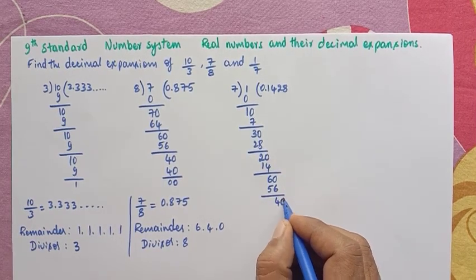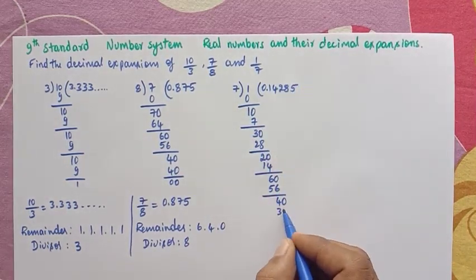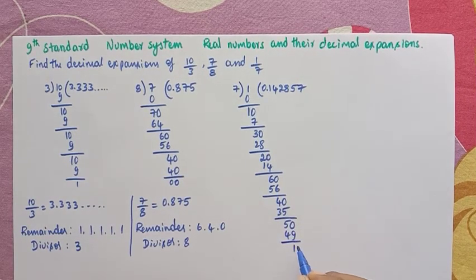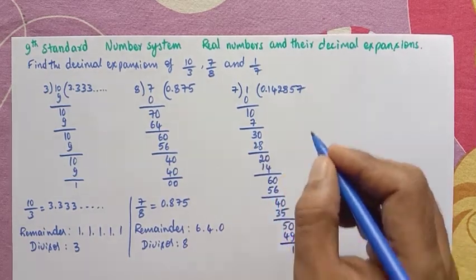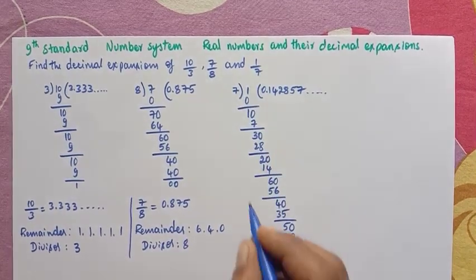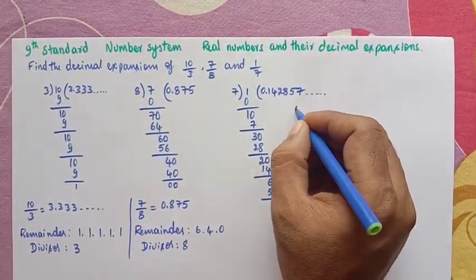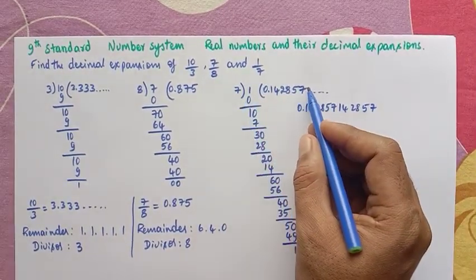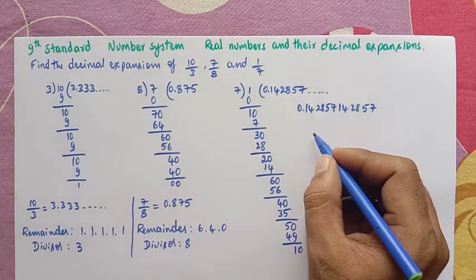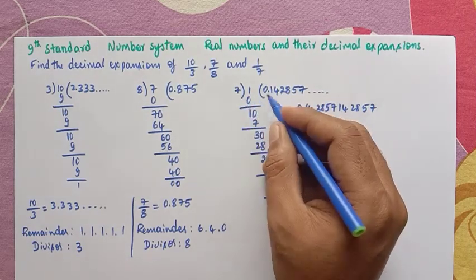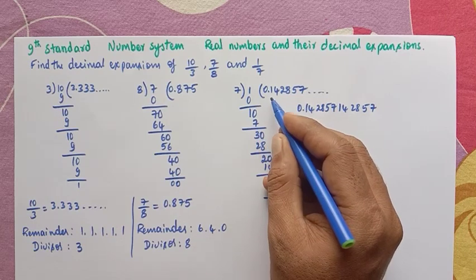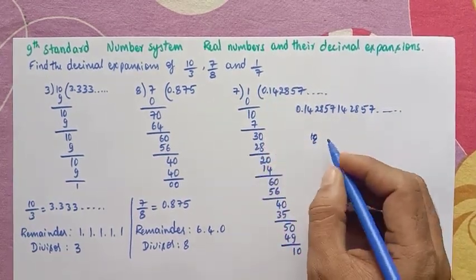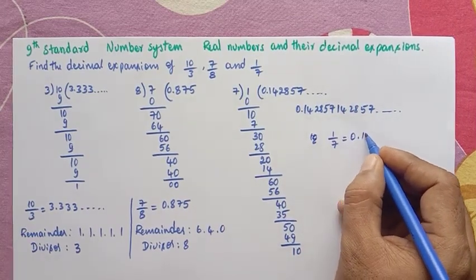Remainder is 4. Then 7 eights are 56, remainder is 5. Then 7 sevens are 49, remainder is 1. So, the cycle has started again. 1, 4, 2, 8, 5, 7 continuously repeats. So, 1 by 7 is equal to 0.142857, and this is the fully repeating part with a period of 6.